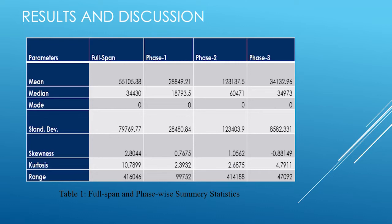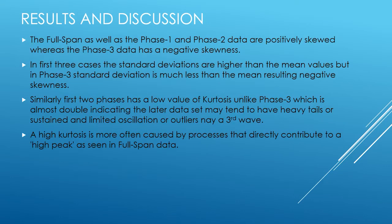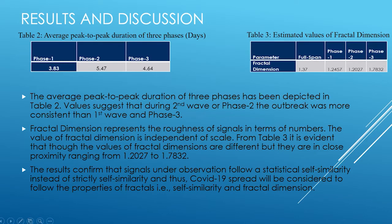For the average peak-to-peak duration of the data, the results suggest that during the second wave — phase two — the outbreak was more consistent than in phase three, as the peak-to-peak duration decreased in phase three.